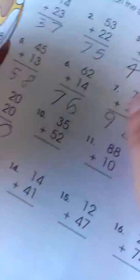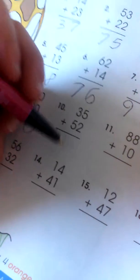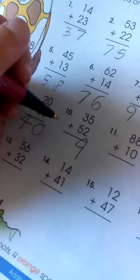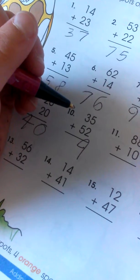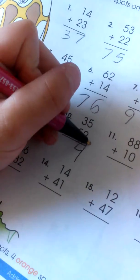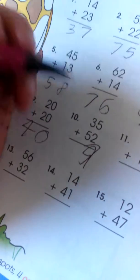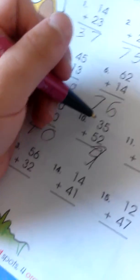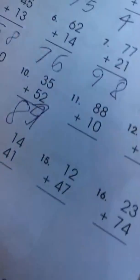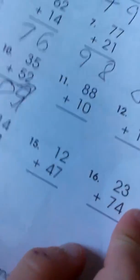35 plus 52. 2 plus 5 is 7. 5 plus 3 is 8. So the answer is 87. 87. Oh, I missed 40.